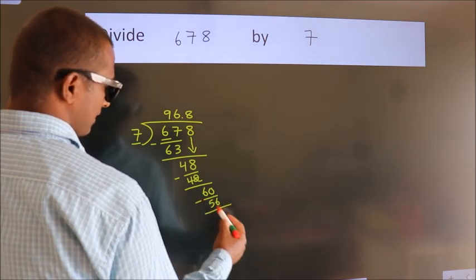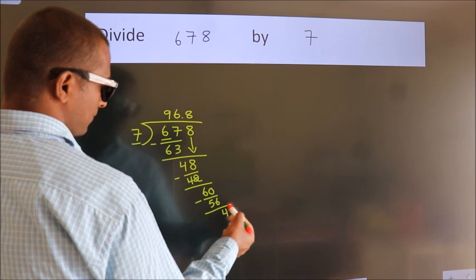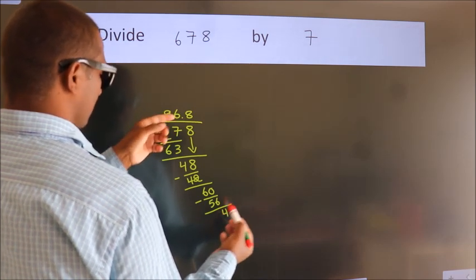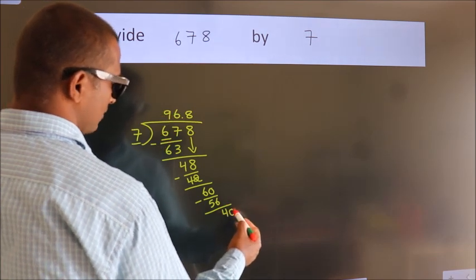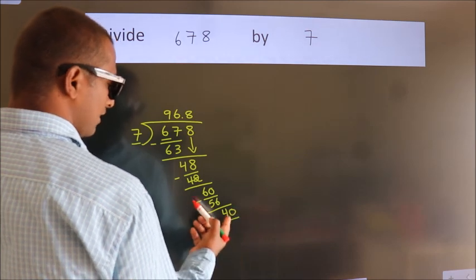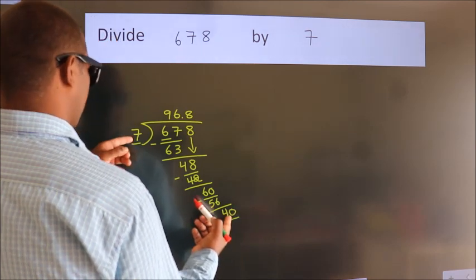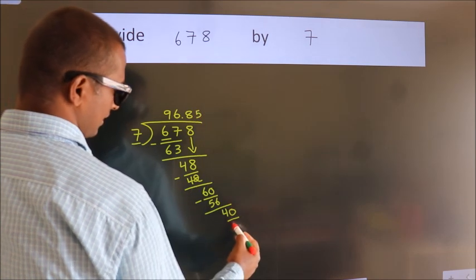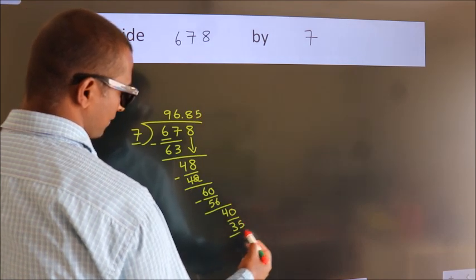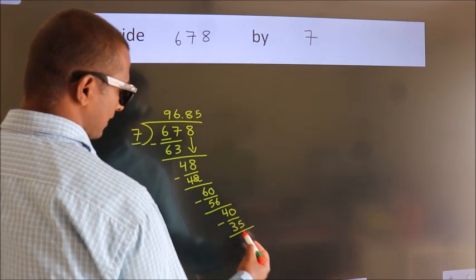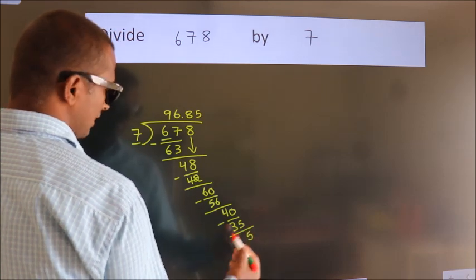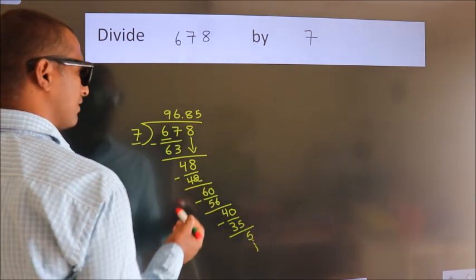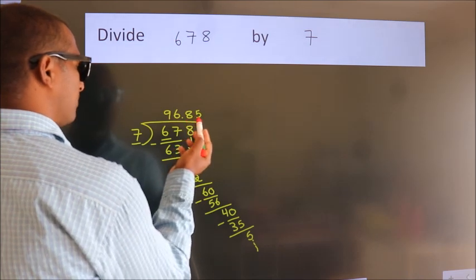Now, we subtract. We get 4. After this, we already have the decimal. So directly take 0. So 40. A number close to 40 in the 7 table is 7 fives, 35. Now, we subtract. We get 5. And the division continues. It is enough if we do up to 2 decimal places.